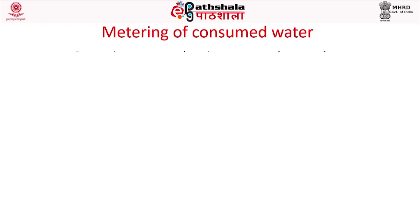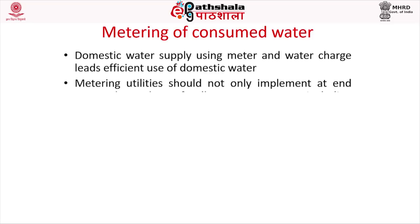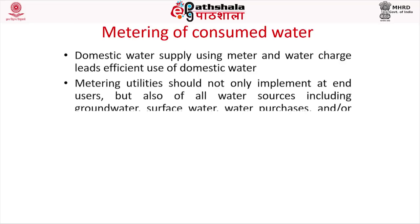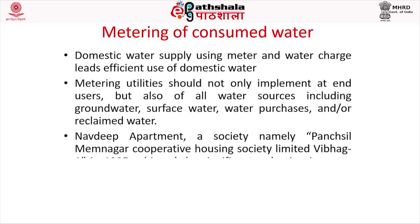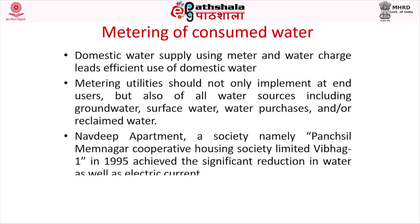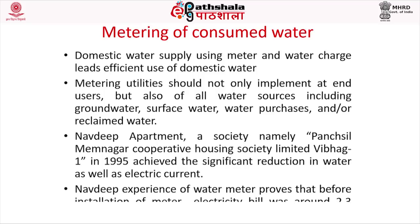Regarding metering of consumed water: domestic water supply using meters and water charges leads to efficient use of domestic water. Metering should be implemented not only at end users but also at all water sources including groundwater, surface water, and reclaimed water. For example, Panchshil Memnagar Cooperative Housing Society Limited in 1995 achieved significant reduction in water and electricity use. Their experience showed that before installation of meters, the electricity bill was around 2.3 times higher.